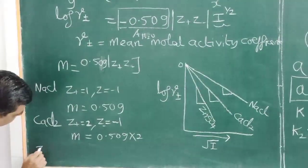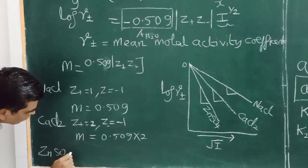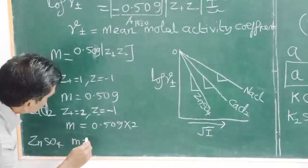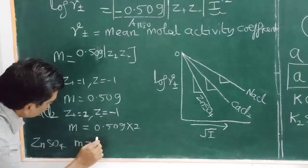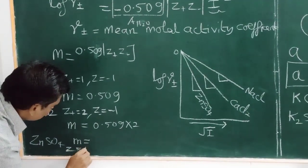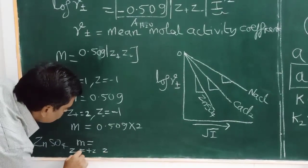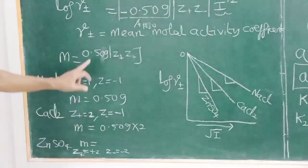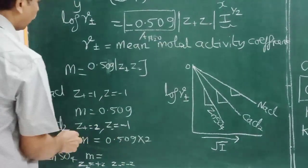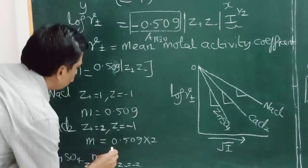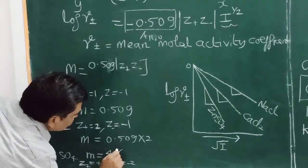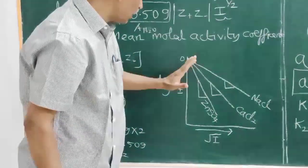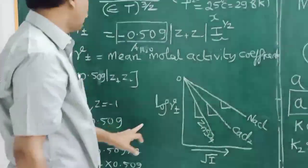For zinc sulfate, z₊ = +2 and z₋ = −2, so the product |z₊z₋| = 4. Therefore the slope is 0.509 × 4, which is much steeper. Problems based on this slope calculation are asked in CSIR, GATE, and CET examinations.